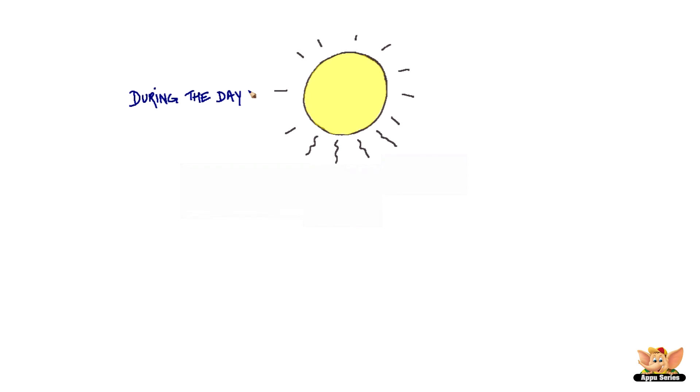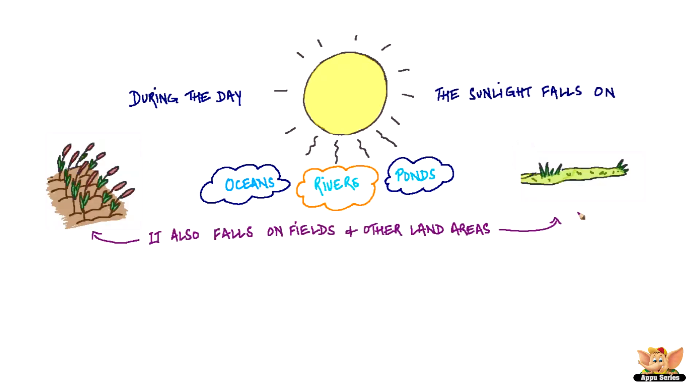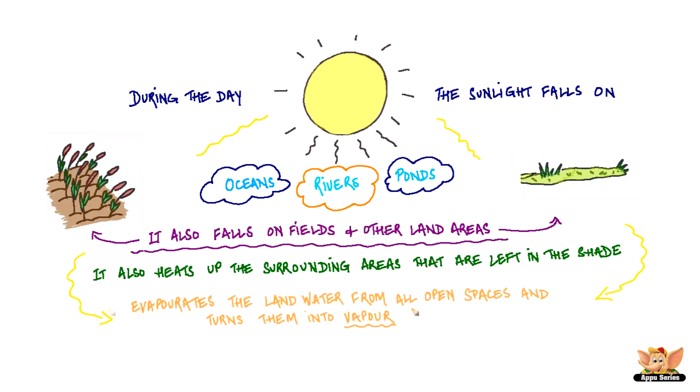During the day, sunlight falls on oceans, rivers, ponds and other water sources. It also falls on fields and other land areas. Along with that, the sunlight also heats up the surrounding areas that are left in the shade. This heat evaporates the land water from all the open spaces and turns it into vapour.